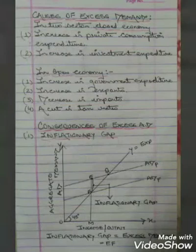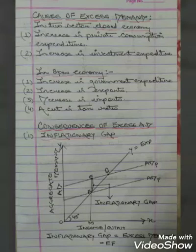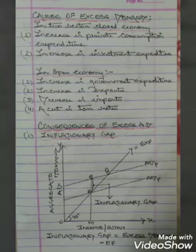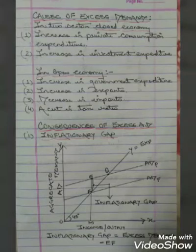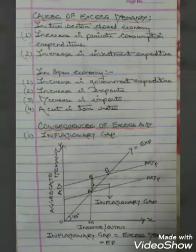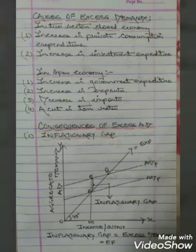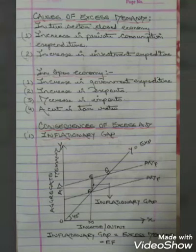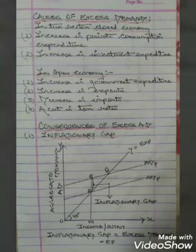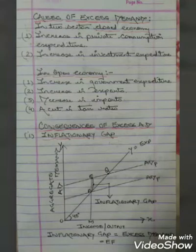Now why does it happen that in an economy AD is more than AS? There are a number of causes. In a two-sector closed economy, the very first reason for this higher AD is an increase in private consumption expenditure — people have increased their spending and are generating more demand. In a country like India, people are more interested in spending than saving, or the poor try to spend more to live like the rich. The second reason is an increase in investment expenditure, which may occur due to bullish business expectations — producers expect good returns if they invest more.